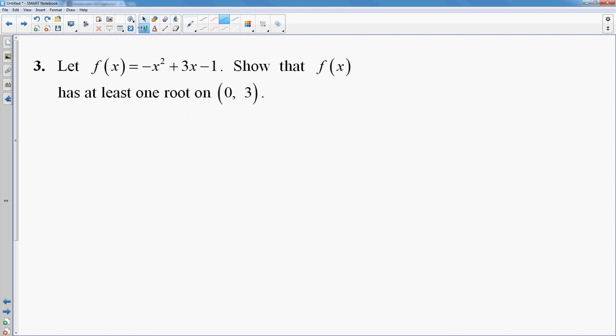Last example I wanted to do. Same type question. I'm giving you a function. I want you to show that there is at least one root. Now that occurs when f of x is equal to 0. And so I'm going to start by plugging in my endpoints. So f of 0 is equal to 0 plus 0 minus 1. f of 3 is negative 3 squared. That would be negative 9, plus 3 times 3, which is 9, minus 1. That's negative 1.